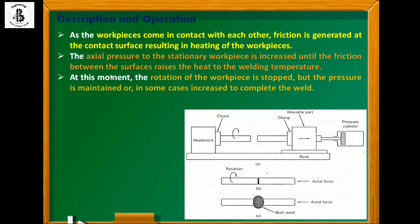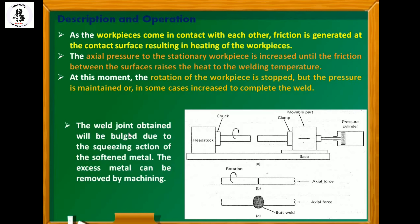At this point, rotation of the workpiece is stopped but the pressure is maintained — and in some cases increased — to complete the weld and ensure a good sound joint. The weld joint obtained will have a bulge due to the squeezing action of the softened metal. This excess metal can be removed by secondary machining operations.